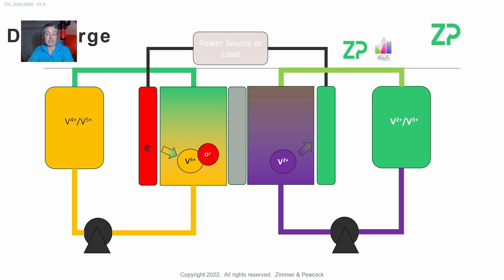vanadium five plus (V5+) in the positive half of the cell. What that means is there's also a migration or diffusion of protons across the ion